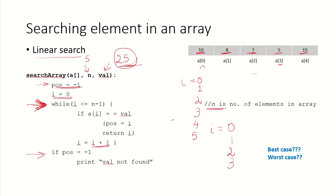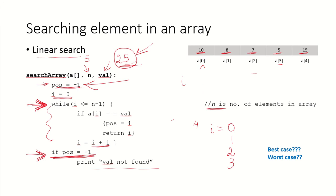I was not able to find this value that I was looking for at all. Since I was unable to find it anywhere in my program, I could not update the position variable. That means my position variable is still minus 1. I have checked all elements, been unable to find the value, and I am out of the loop with position still minus 1.